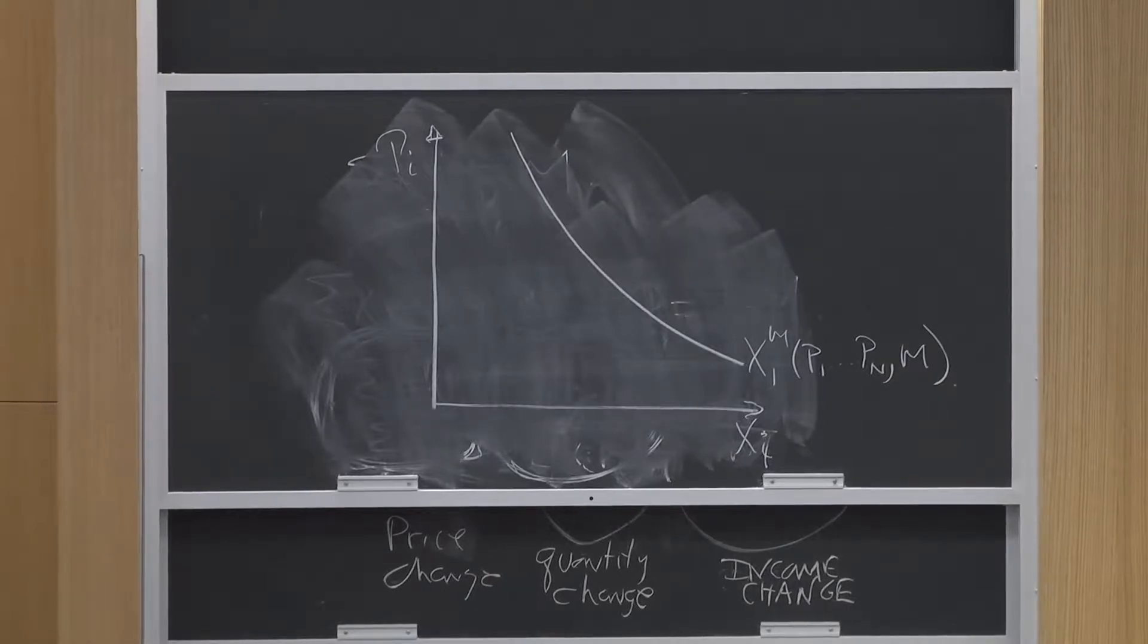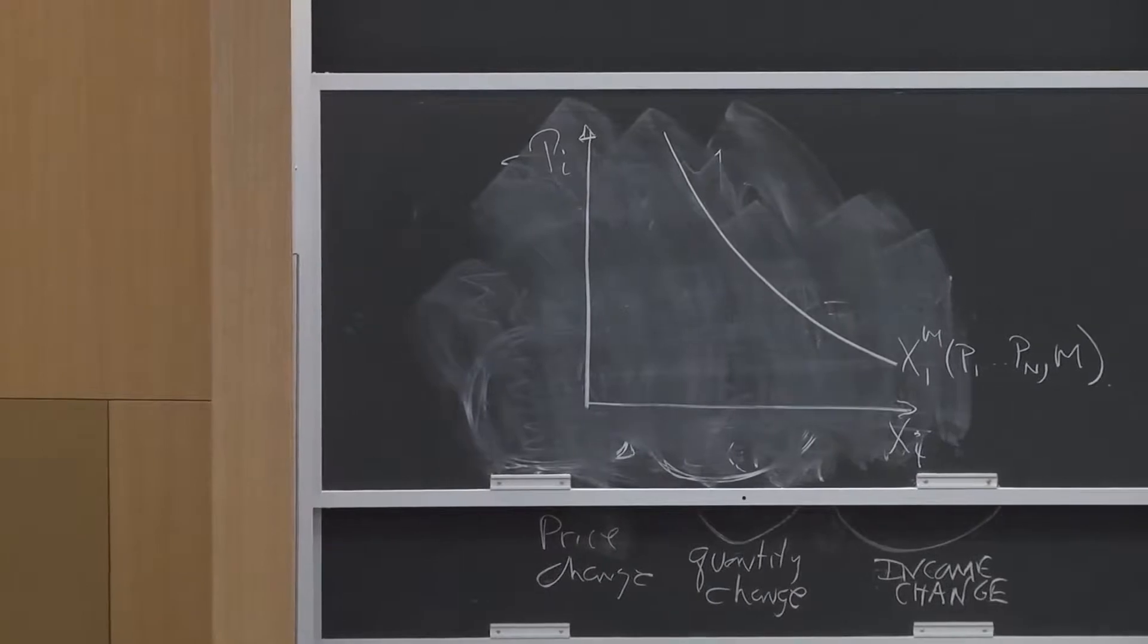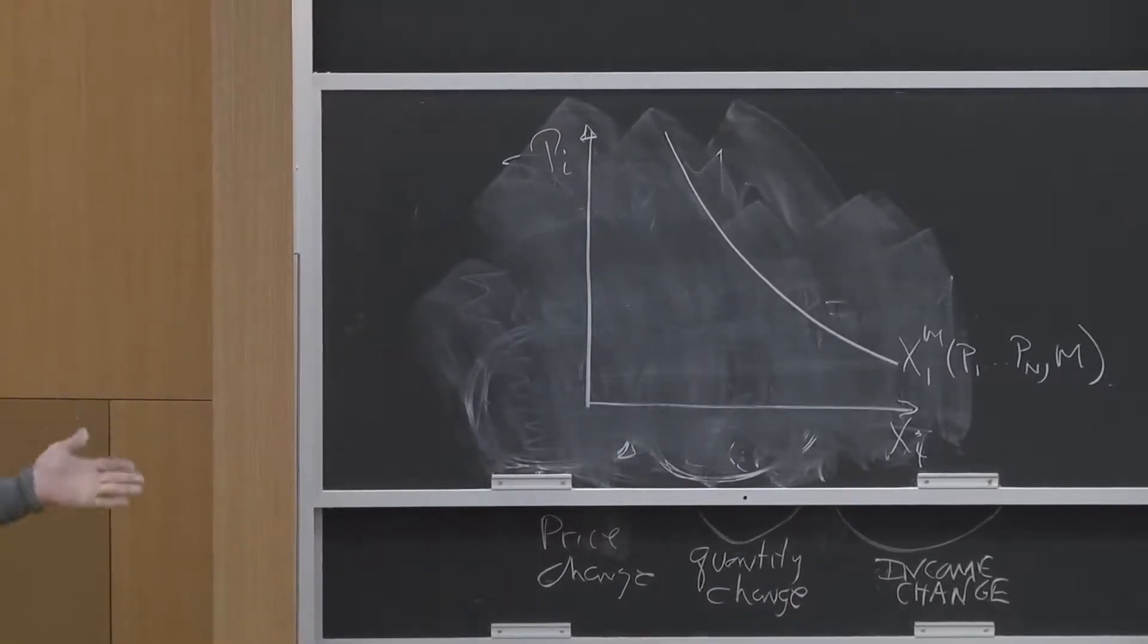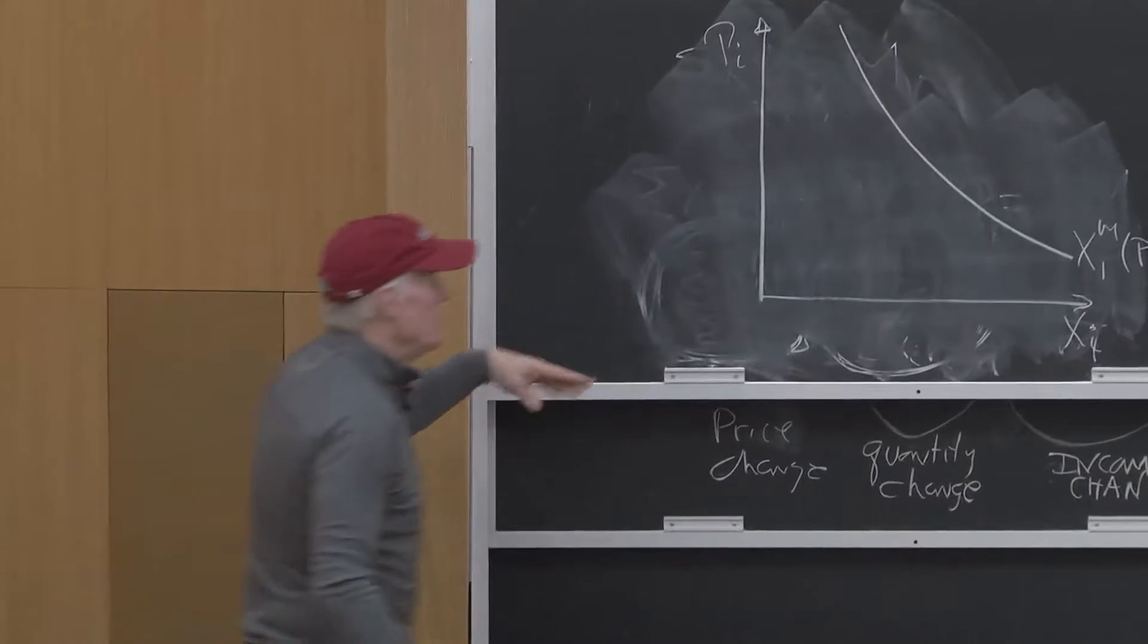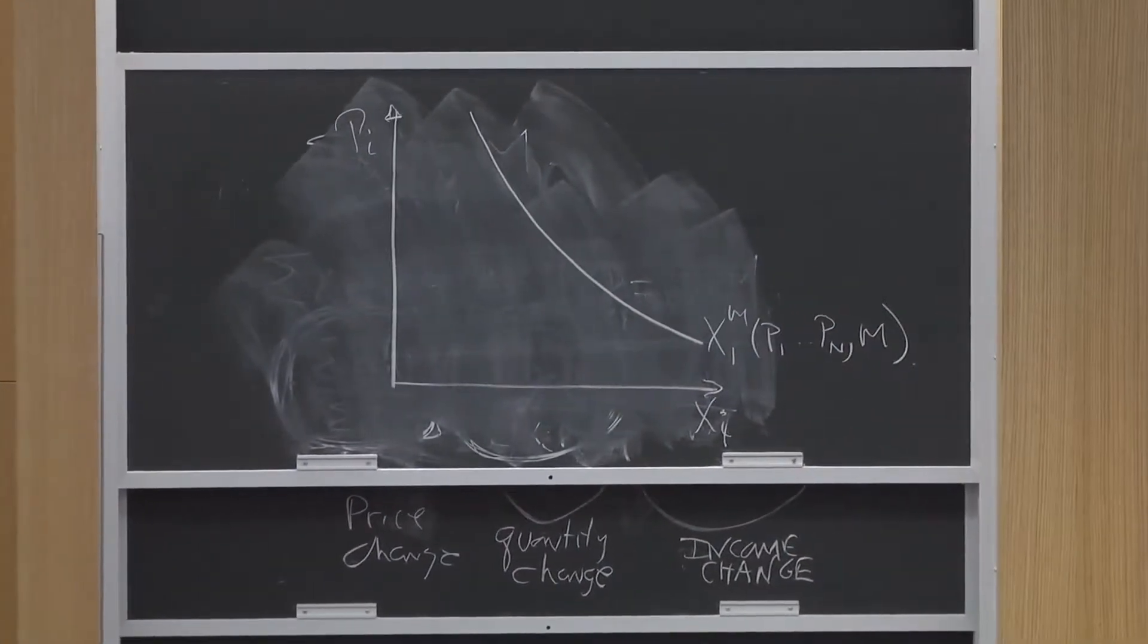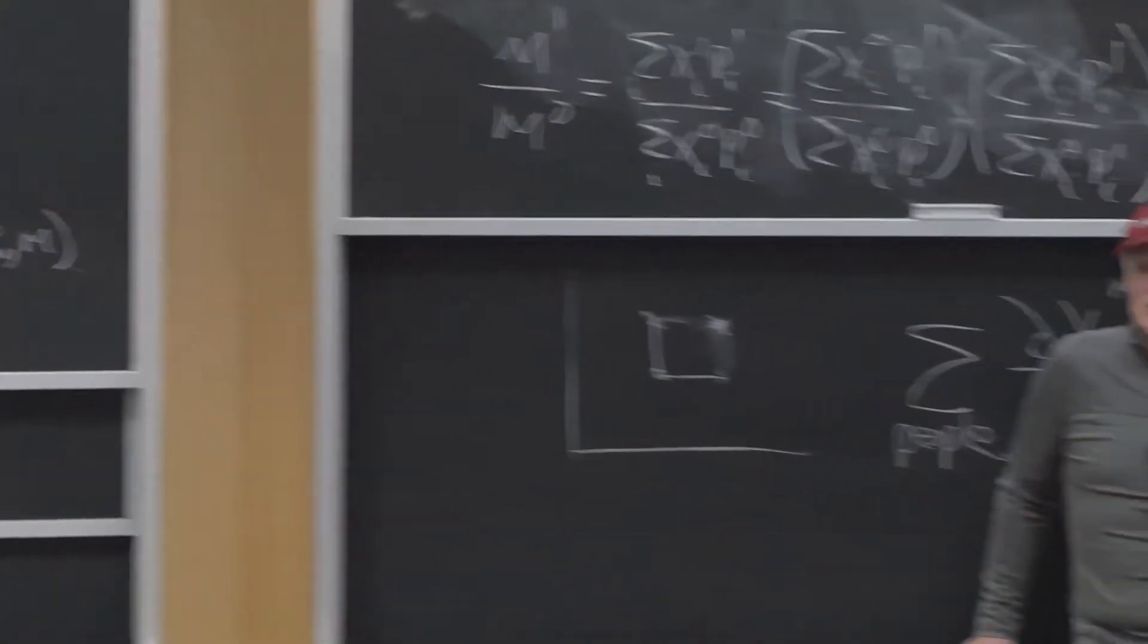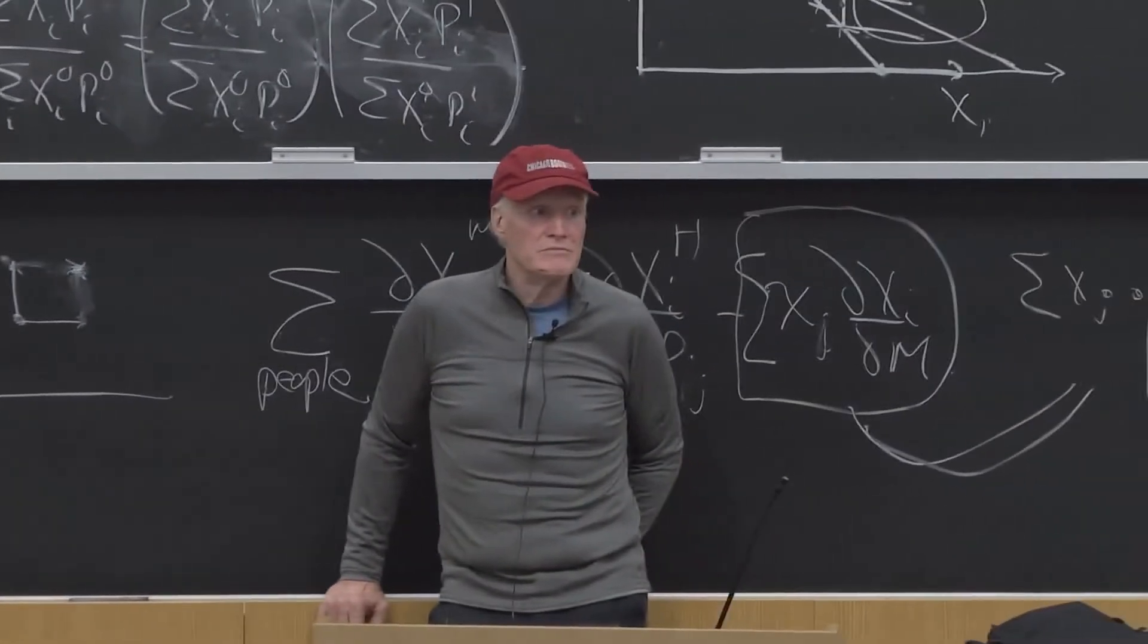It holds income constant, holds the price of every good other than good I constant. Along this curve, we're varying the price of good I, holding all other prices constant. I'm assuming this demand curve satisfies the law of demand.